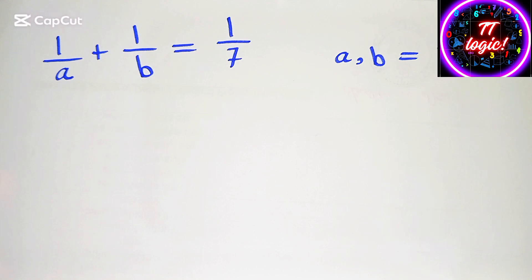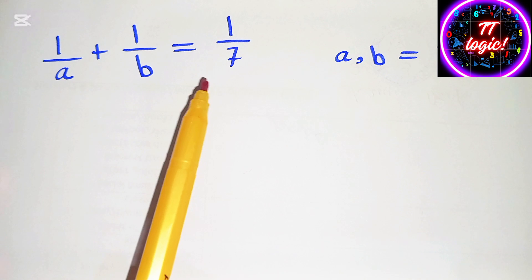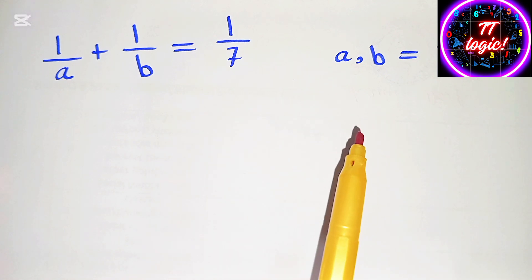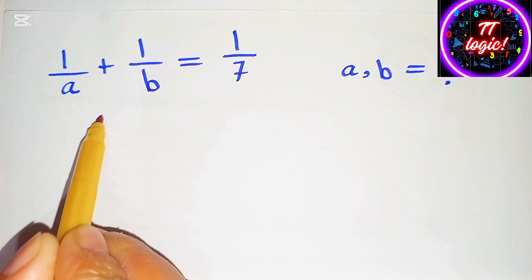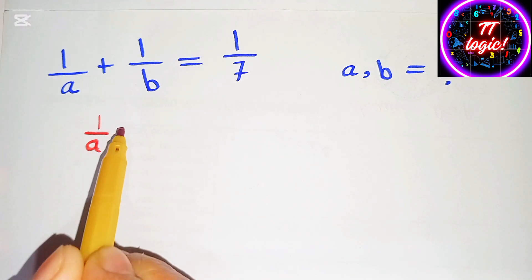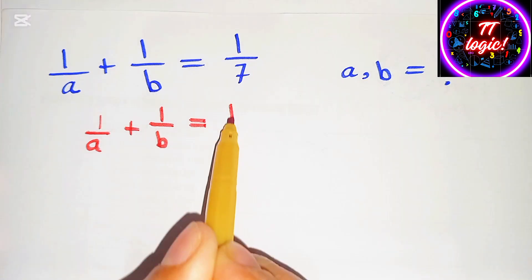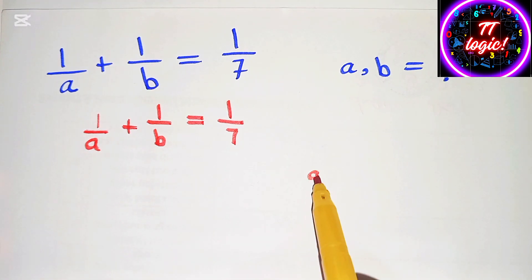Hello everyone, welcome back. Today we solve the problem: 1 over A plus 1 over B is equal to 1 over 7, and we need to find the values of A and B. First, we can write 1 over A plus 1 over B equals 1 over 7, and now we multiply AB on both sides.